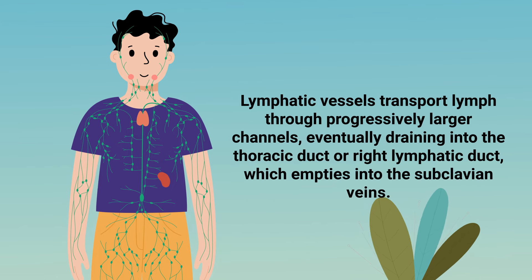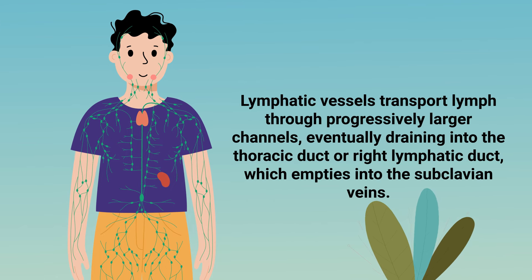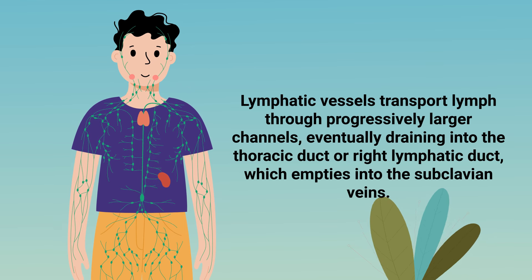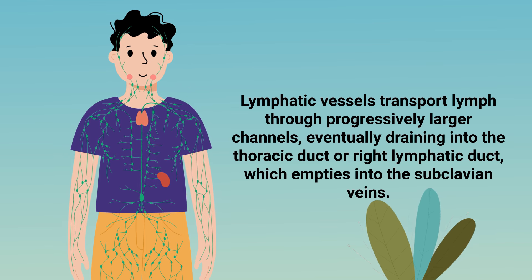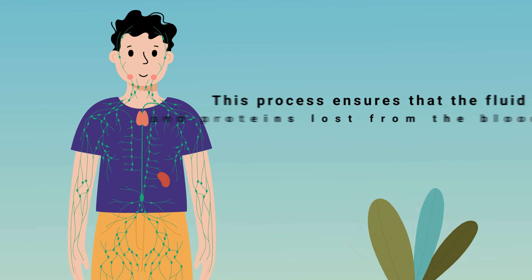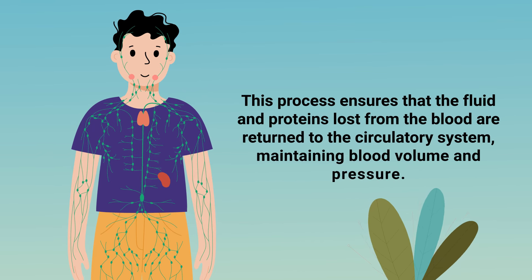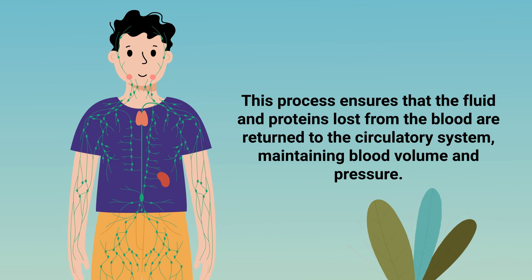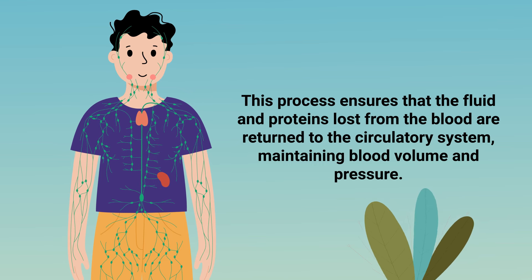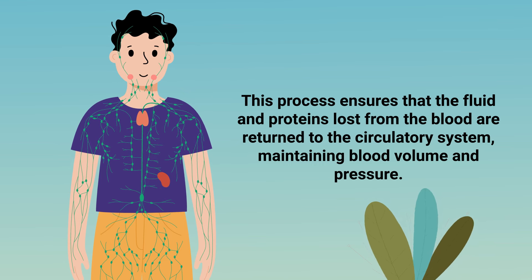Lymphatic vessels transport lymph through progressively larger channels, eventually draining into the thoracic duct or right lymphatic duct, which empties into the subclavian veins. This process ensures that the fluid and proteins lost from the blood are returned to the circulatory system, maintaining blood volume and pressure.